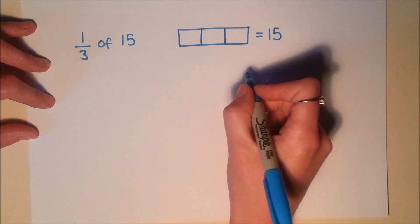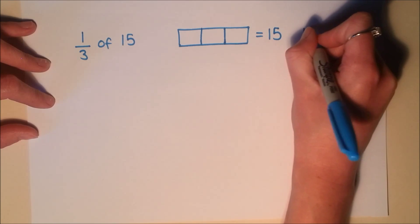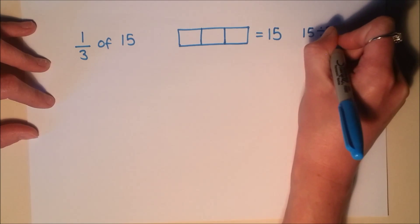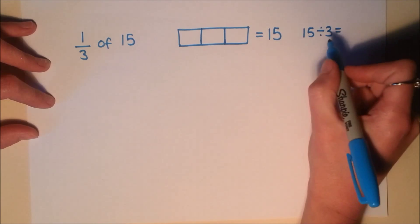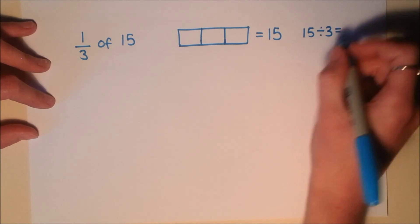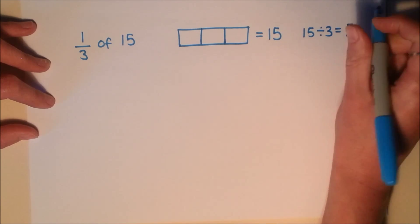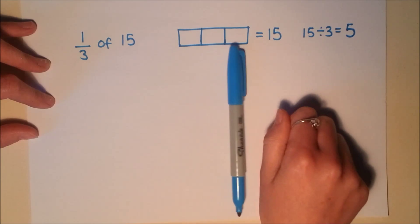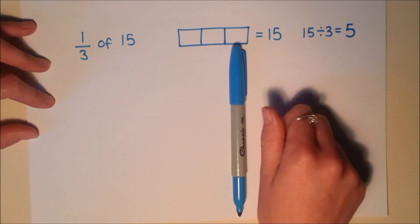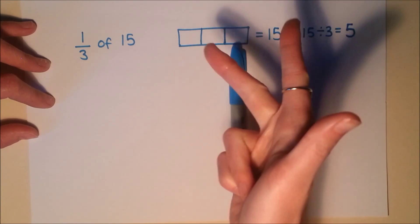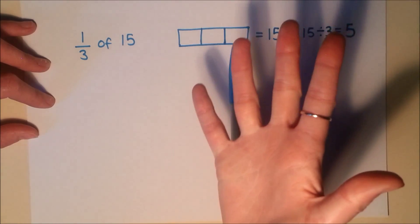Now what I've got to do is work out what happens if I divide 15 into 3 equal pieces. If knowledge of your times tables is good, you might realize straight away that that's 5. But if you're not sure, just count up in 3s until you get to 15. So 3, 6, 9, 12, 15.